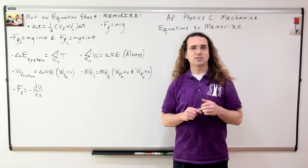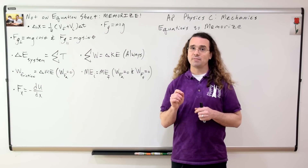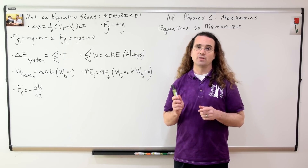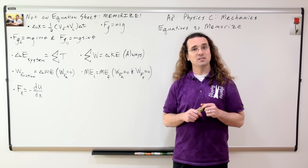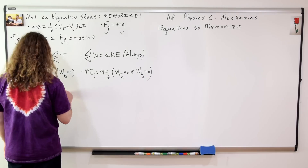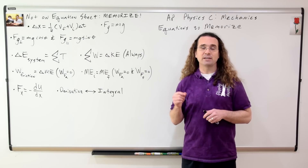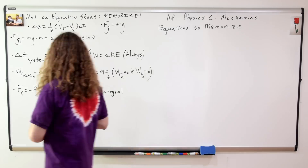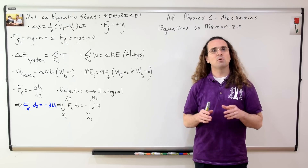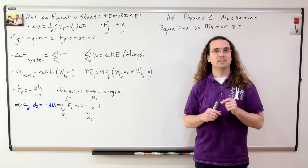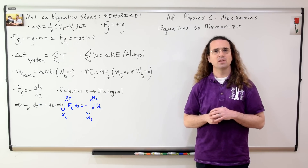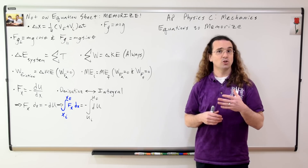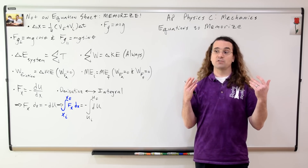When a force is conservative, that force is equal to the negative of the derivative with respect to position of the potential energy associated with that force. This equation is almost guaranteed to come up on the exam. Every derivative is an integral and every integral is a derivative. For example, using the equation for conservative force, we can multiply both sides by dx and then take the definite integral of the whole equation, which means on the left-hand side we have the definite integral of force with respect to position, which is the equation for what?